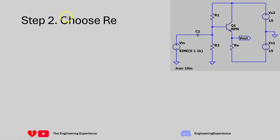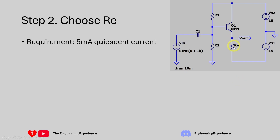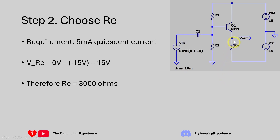Next we can choose RE. The question tells us we need a quiescent current of 5 milliamps. We've set the emitter node to 0 volts and we have minus 15 volts at the bottom of RE, so the voltage across RE is 15 volts. Using Ohm's law — V divided by I, so 15 volts divided by 5 milliamps — gives us a resistor value of 3000 ohms.